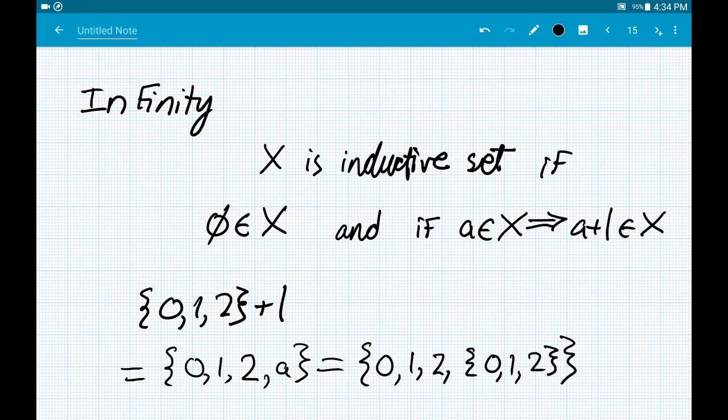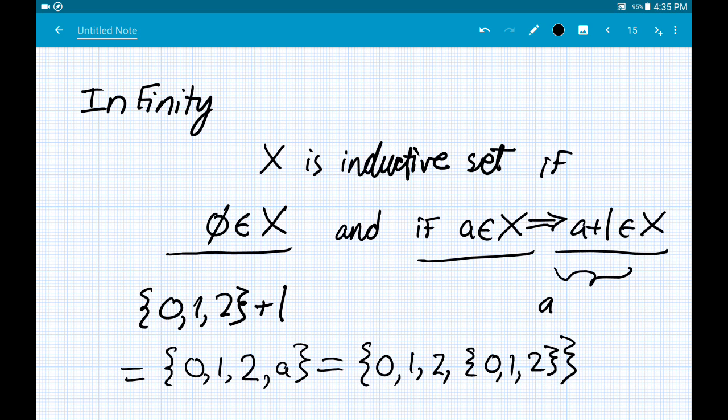Now, if you've never heard talk about an inductive set, an inductive set is one which has the empty set, and if it has any element, then it has that element plus one. Now, what does that even mean, because a, this arbitrary element, may be a set, and therefore we do not have sort of like a common-sense, familiar notion of what a set plus one even means. Well, here's what it means. That means a plus one is a union the set of a.